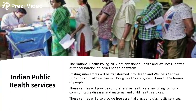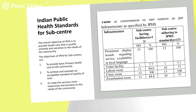Under the Indian public health services, existing sub-centers were transformed into health and wellness centers. Under this mission, 1.5 lakh centers were brought under the healthcare system, closer to people's homes in rural areas. These centers provided comprehensive health care including for non-communicable diseases, and specifically looked after maternal and child health services. All immunization services were provided at these sub-centers, along with free essential drugs and diagnostic services.